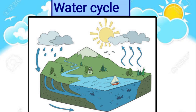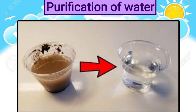Now let's understand the water cycle. In nature, the process of evaporation and condensation take place continuously. Water evaporates from lakes, rivers, oceans and other water bodies, then condenses and falls down as rain or snow. This forms the water cycle.